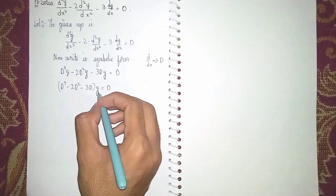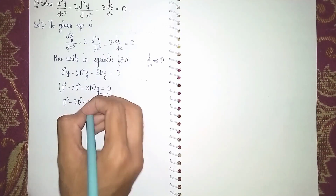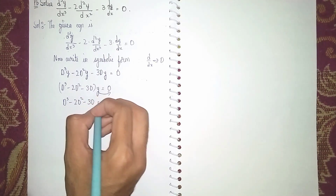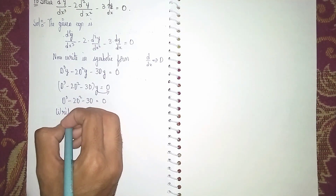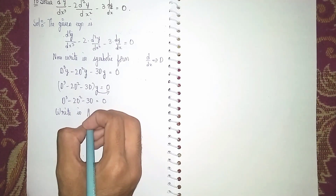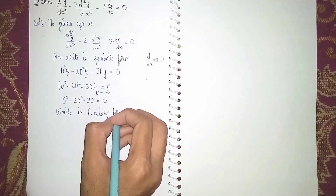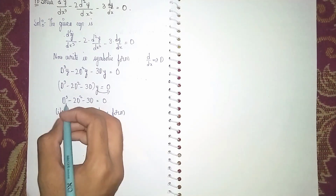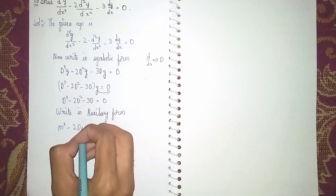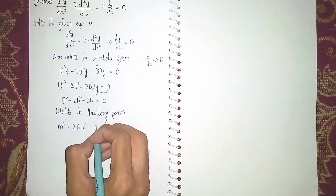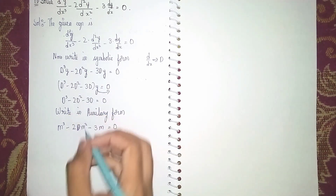When y is factored out, the equation becomes D³ minus 2D² minus 3D equals zero. Now write in auxiliary form. Auxiliary form means instead of D we put m, so it becomes m³ minus 2m² minus 3m equals zero.